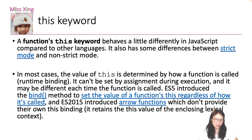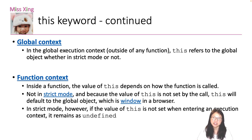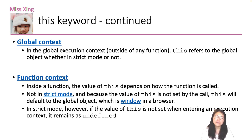Let's look at several scenarios about the `this` keyword. First is the global context — outside of any function. In the global context, `this` will always refer to the global object. In a browser, that's `window`; in Node.js, it's `global`. This is true regardless of whether you're using strict mode or non-strict mode.